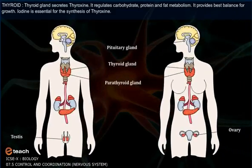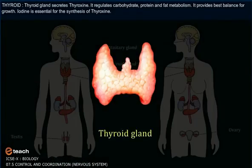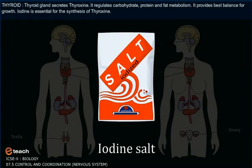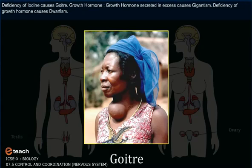Thyroid gland secretes thyroxine. It regulates carbohydrates, protein and fat metabolism, and provides the best balance for growth. Iodine is essential for the synthesis of thyroxine. Deficiency of iodine causes goiter.